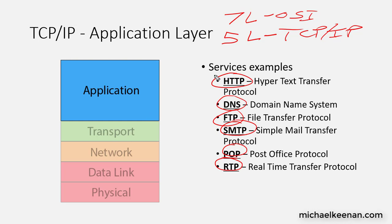Those are just examples — there are a lot more out there that you can look up — but these are some of the main ones you're going to see on the CCNA exam and on different networking exams. Just remember that the application layer pertains to those protocols and services whose primary job is to transport information from one application layer to another application layer.